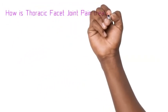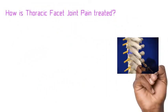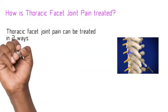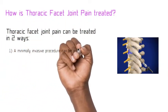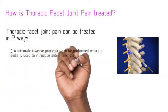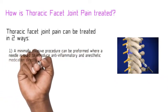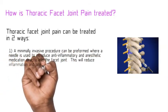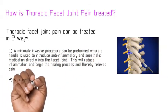How is thoracic facet joint pain treated? Thoracic facet joint pain can be treated in two ways. A minimally invasive procedure can be performed where a needle is used to introduce anti-inflammatory medication and anesthetic medication directly into the facet joint. This will reduce the inflammation and begin the healing process and thereby relieves the pain.